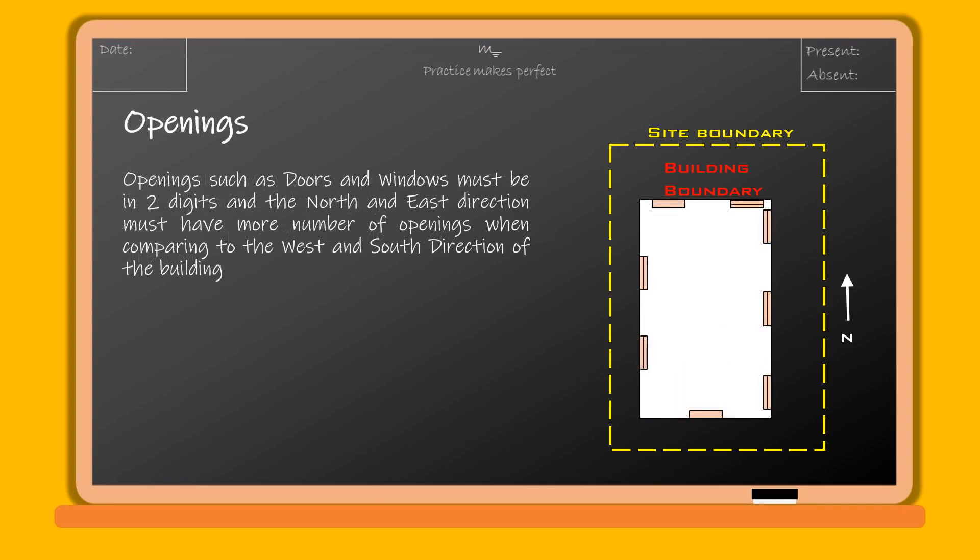Openings such as doors and windows must be in two digits in number, and the north and east directions must have more openings compared to the west and south directions of the building.